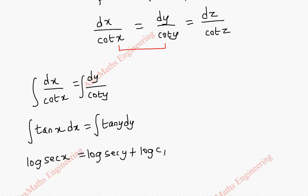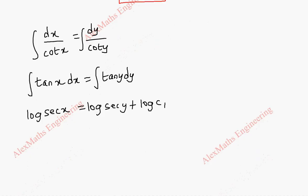instead of c1 we take the constant as log c1. Now we get log of sec x equal to, using log rule, log a plus log b is log a into b. So sec y into c1.